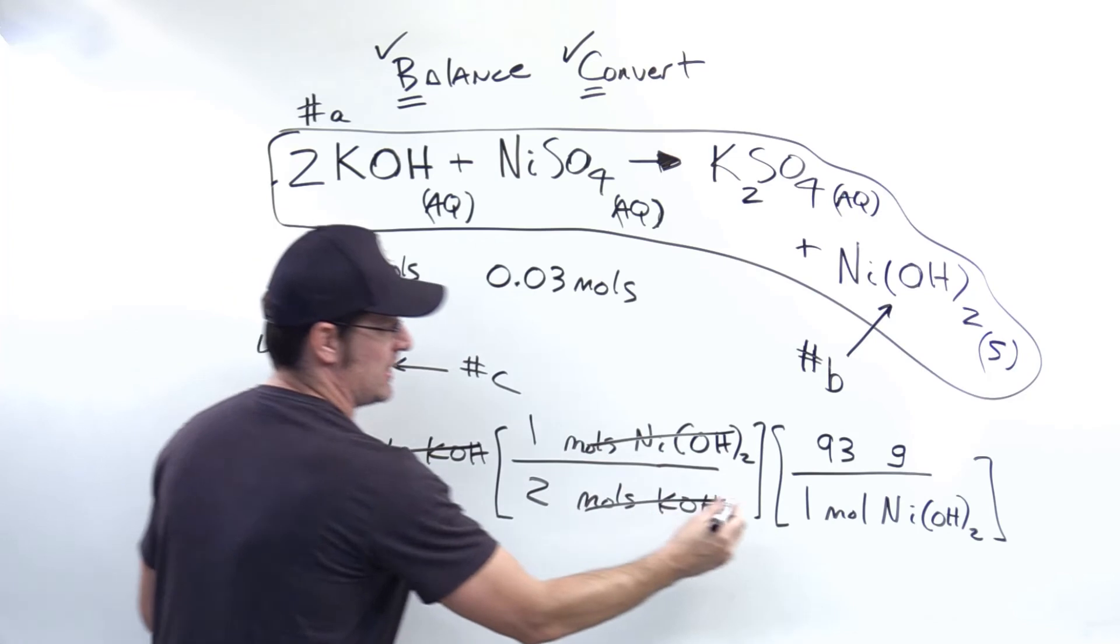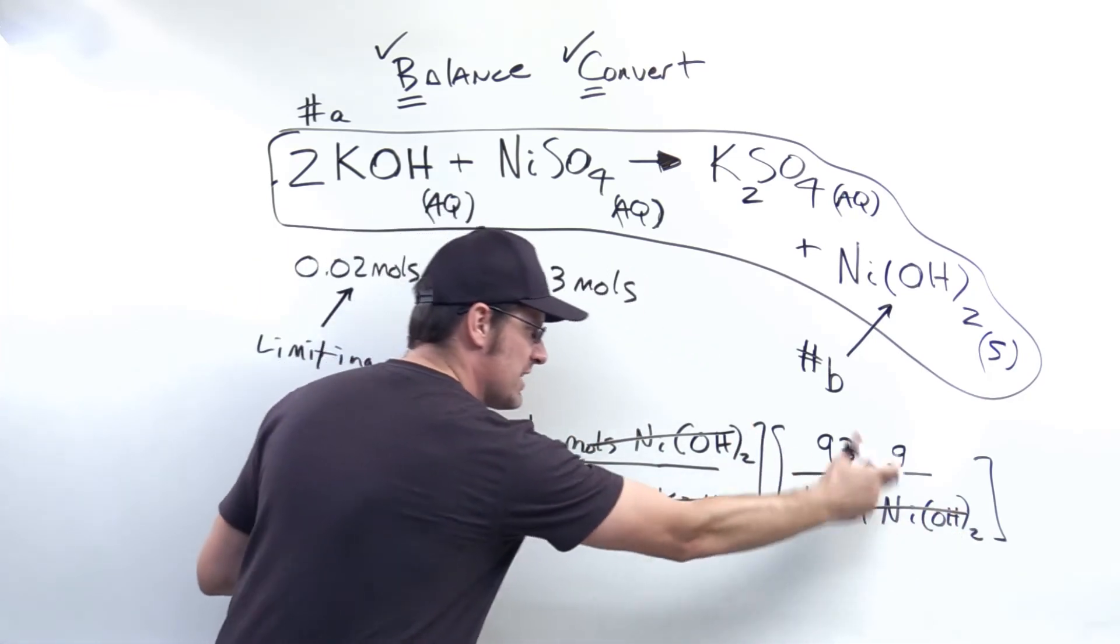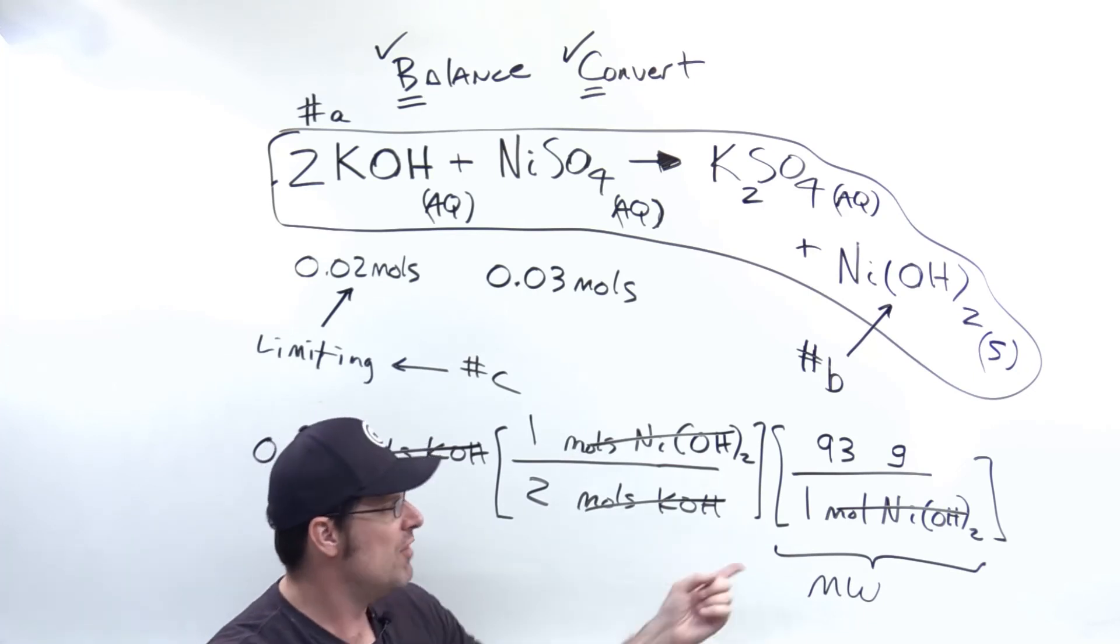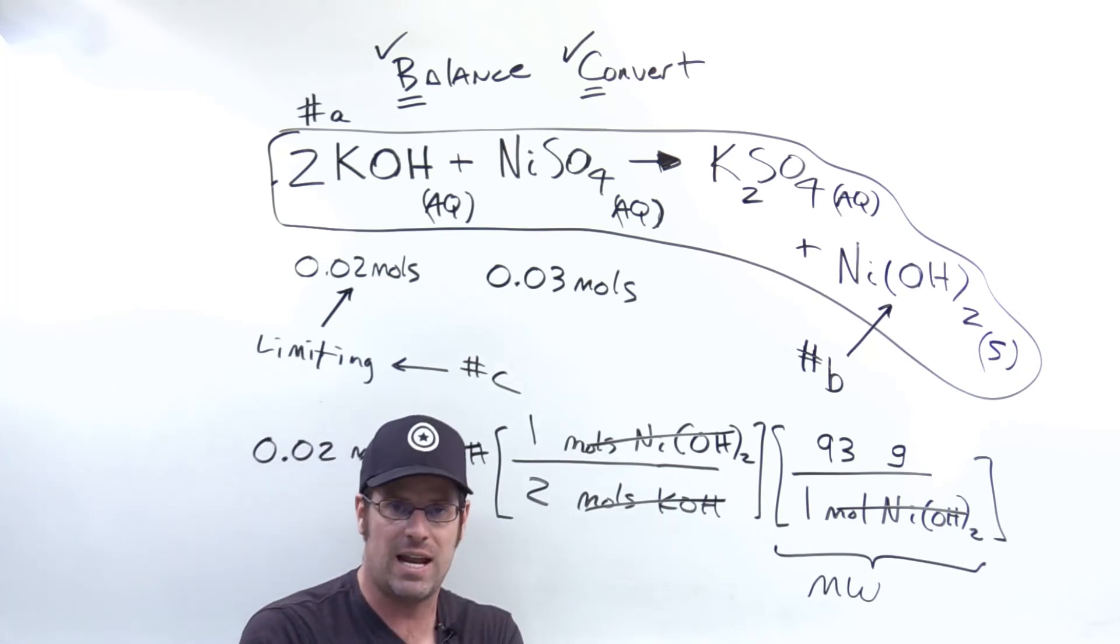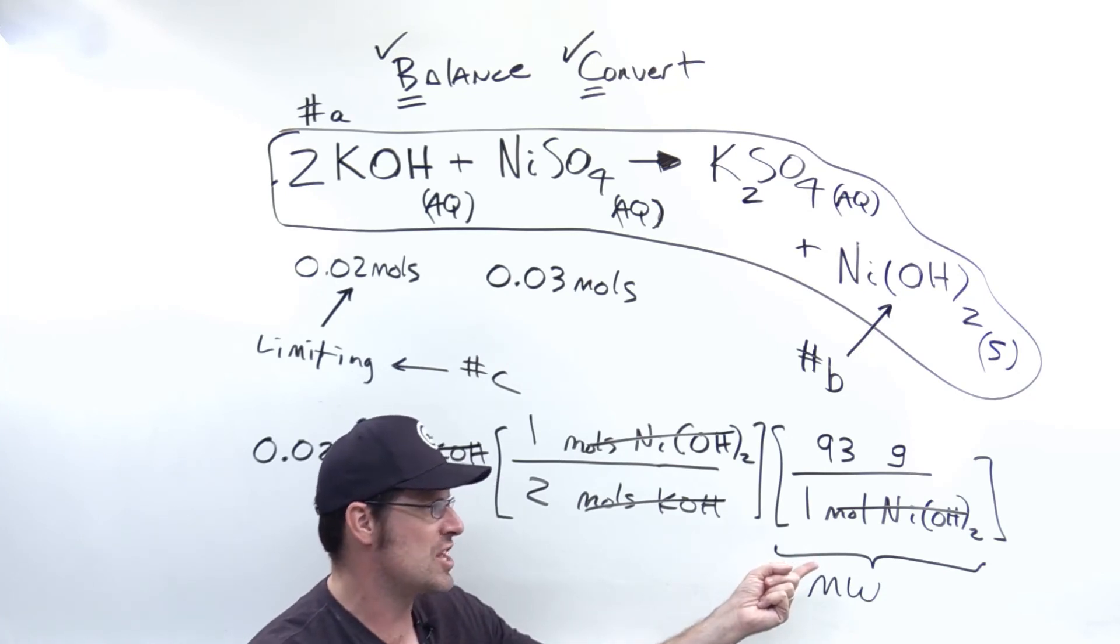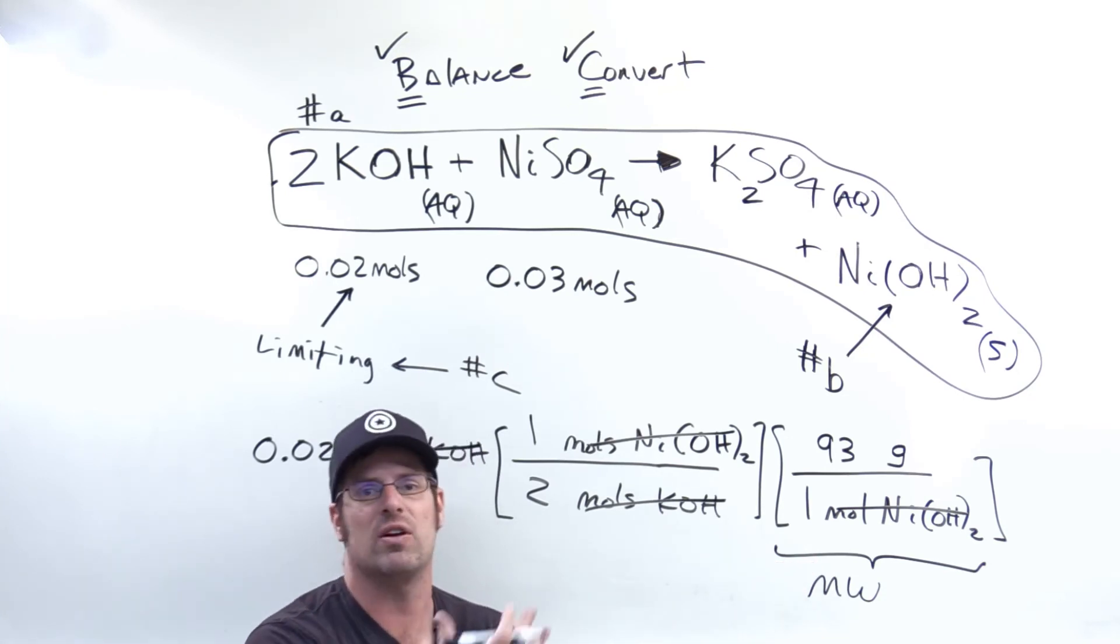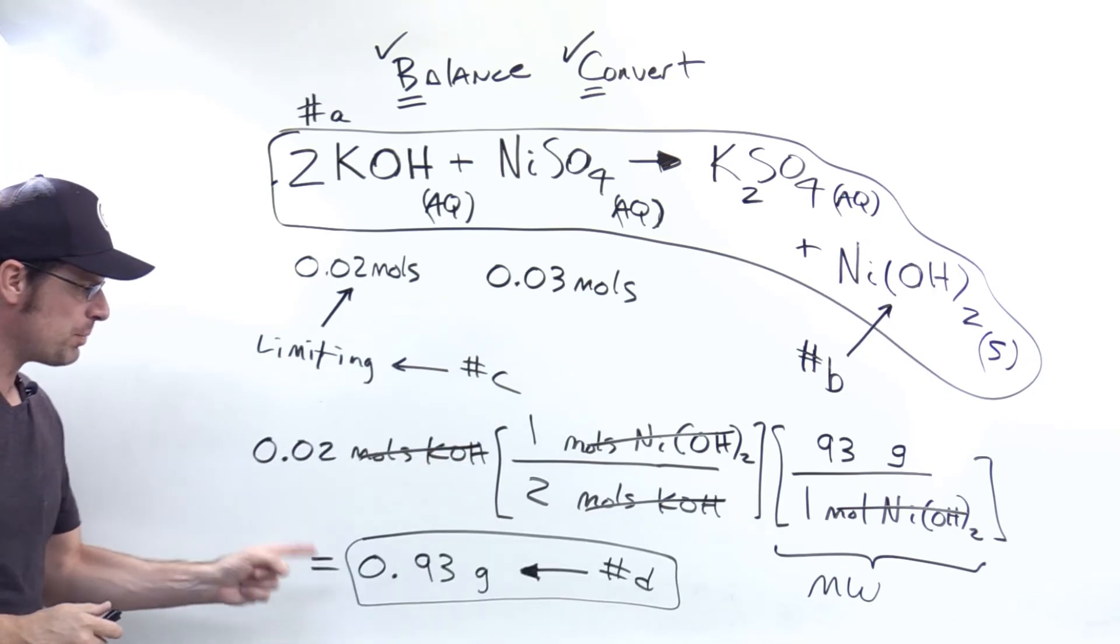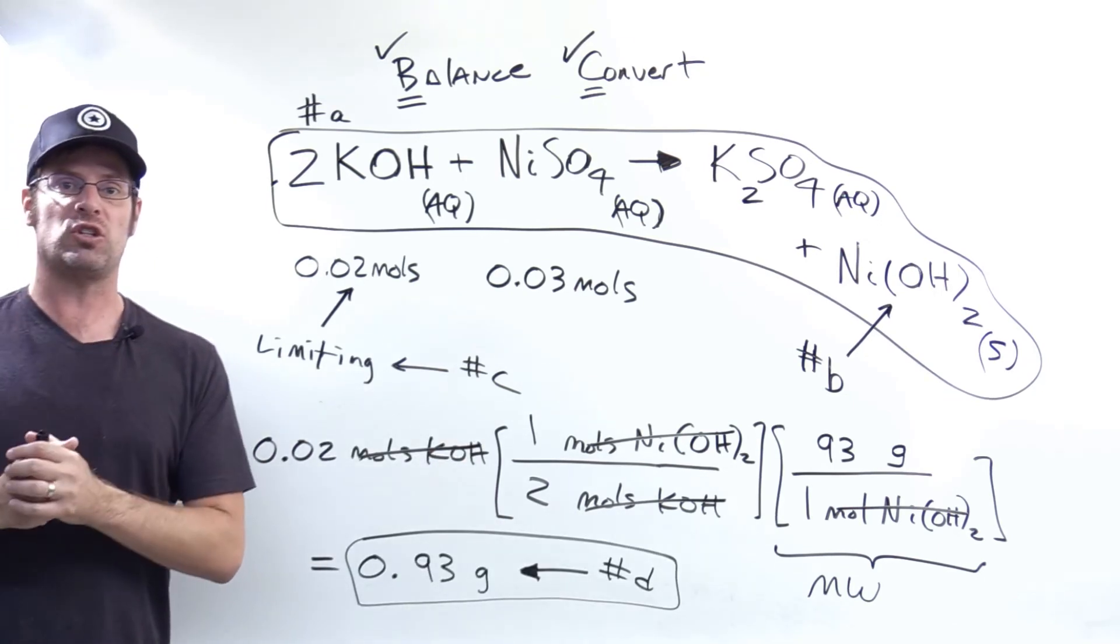Now I've got moles nickel hydroxide here, cancelling out moles nickel hydroxide in the basement. What is this? This is the molecular weight, also called formula weight sometimes, of nickel hydroxide. Keeping in mind that nickel atoms weigh about 59, each oxygen weighs about 16, and there's two oxygens in this formula. And each hydrogen weighs one, and there are two such hydrogens. You multiply all that stuff out, you get an answer of 0.93 grams, which is our answer to part D.